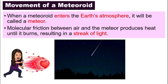The same thing goes for a meteoroid. As it enters into our Earth's atmosphere, it will start to have friction between the meteoroid and the air. When there is friction, it produces heat energy, and it will catch on fire and start to burn.